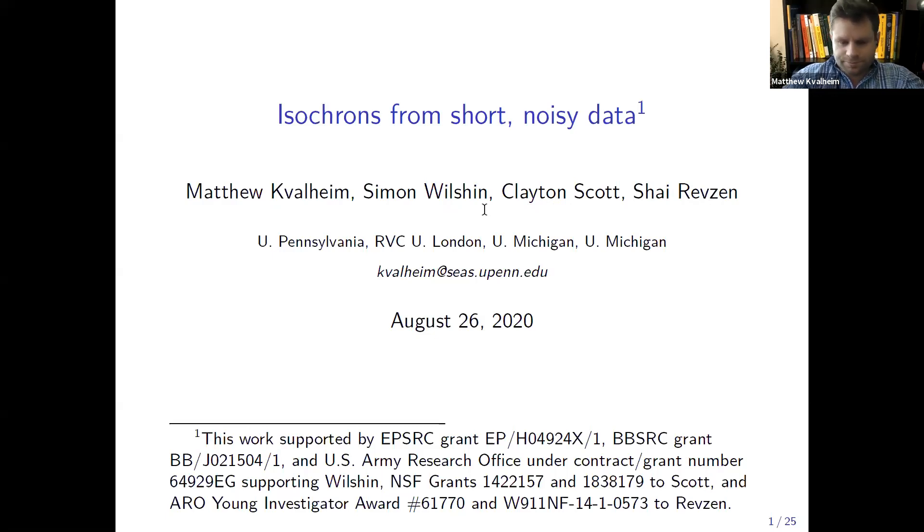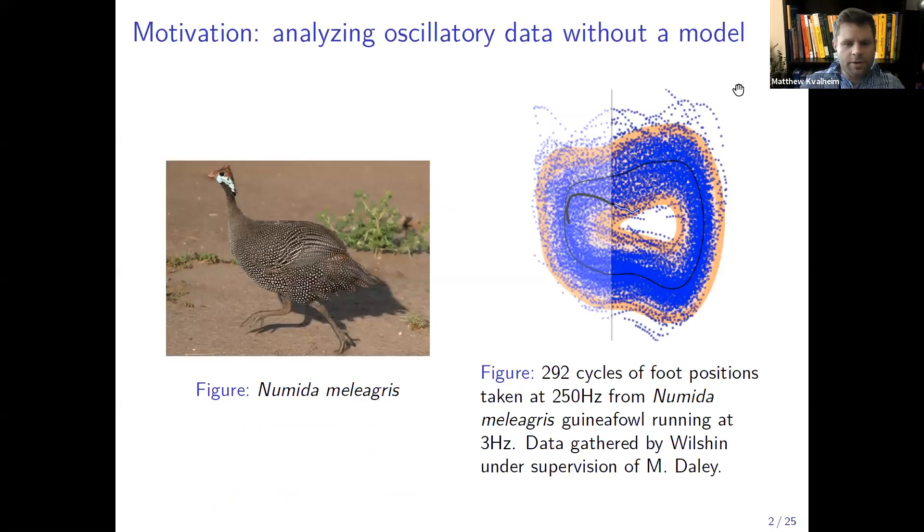So the motivation for this work is that in my academic lineage there are a lot of people working with animals and robots and they want to understand how they move. Here's an example. On the left there is a guinea fowl and on the right what you're seeing is just a bunch of kinematic data, foot positions of a guinea fowl running. If you look at this cloud of bluish dots you can see that it looks pretty complicated but it's kind of clearly demarcating an annular region.